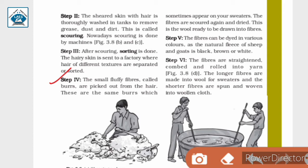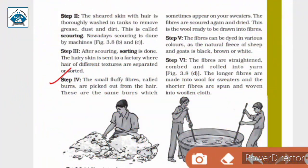Step 4: The small fluffy fibers called burrs are picked from the hair. These are the same burrs which sometimes appear on your sweater. The fibers are scoured again and dried. This is the wool ready to be drawn into fibers.